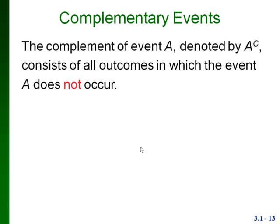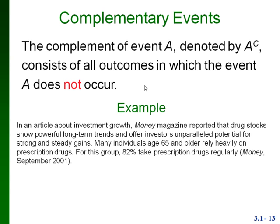Complementary events. This is something that becomes very important a couple chapters down the road. The complement of an event A — in this book, they use a superscript C to denote a complement — consists of all the outcomes in which event A does not occur, so it's like the opposite of A occurring.